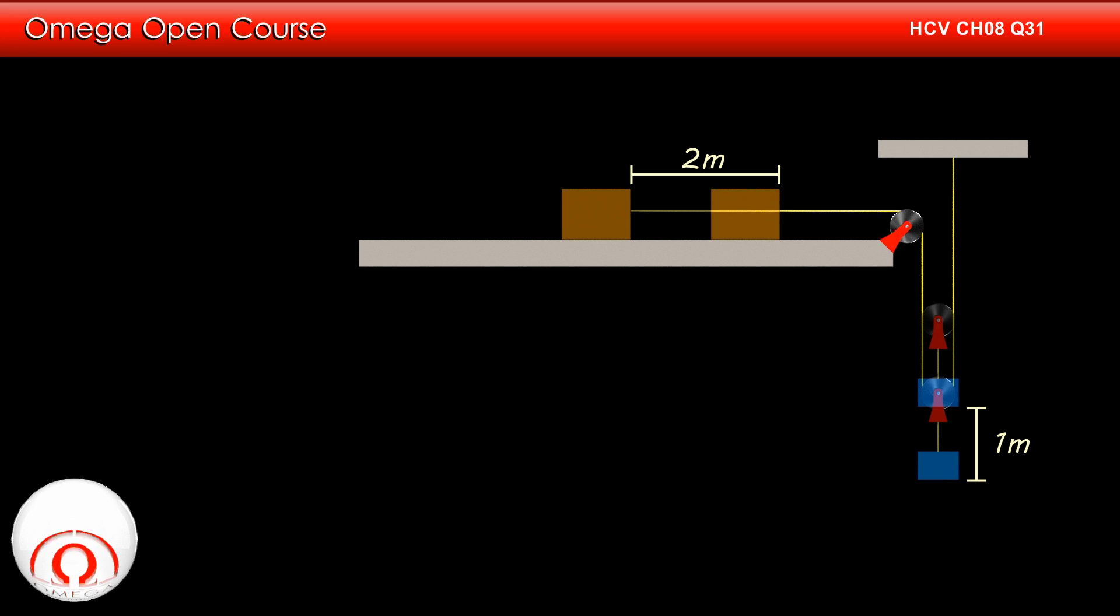Since the block on the table moves twice the distance moved by 1 kg block, its speed will also be twice the speed of 1 kg block. Let us denote the 4 kg block by m1 and 1 kg block by m2.